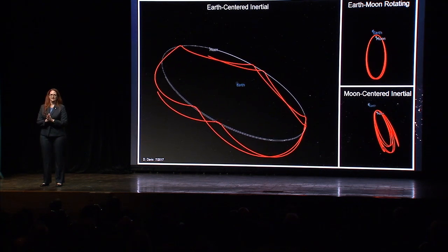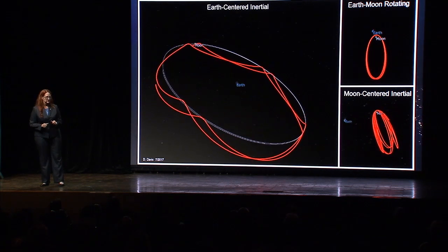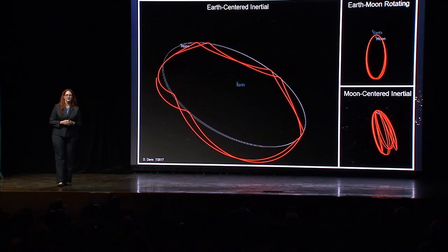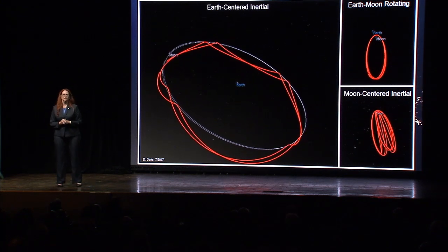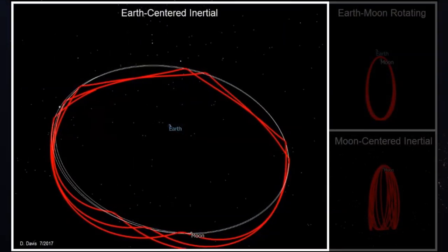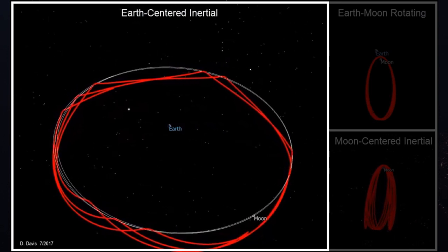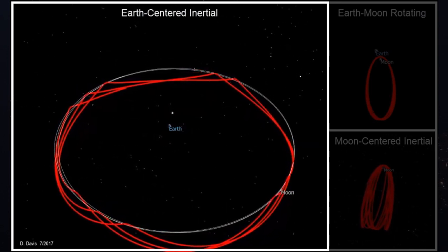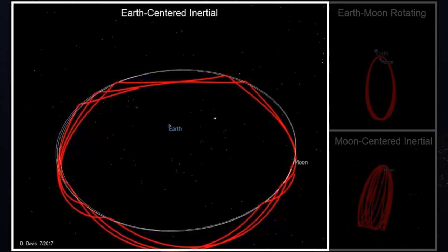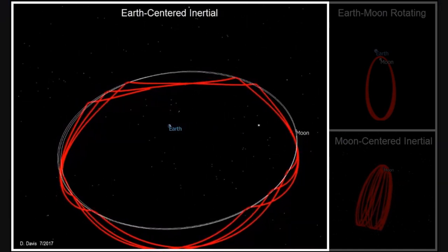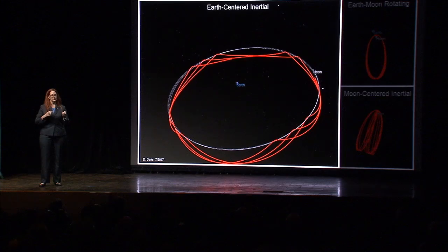The near-rectilinear halo orbit is different from those circular orbits that Kepler discovered, like the orbit that the Moon takes around the Earth. These three views show that the near-rectilinear halo orbit is an orbit about the Earth but at the distance of the Moon, so it's tugged by the Moon. These Earth-Moon interactions mean that for every two orbits that the Moon makes about the Earth, the spacecraft — the Gateway in this near-rectilinear halo orbit — will make nine leapfrogs over and under the Moon.